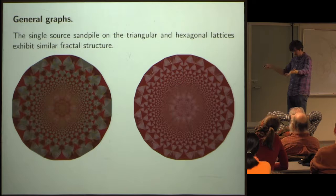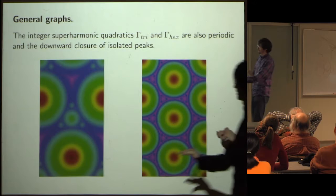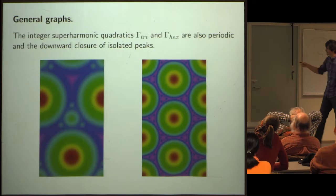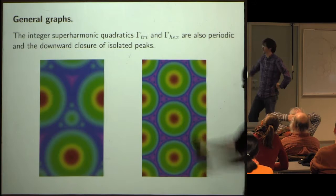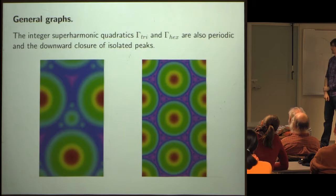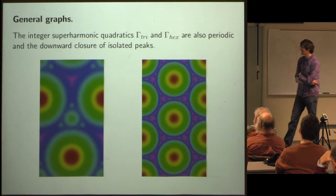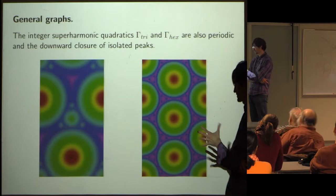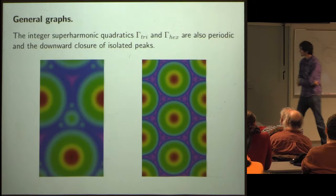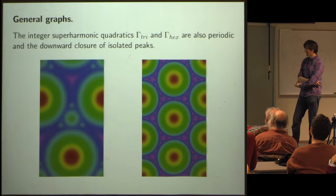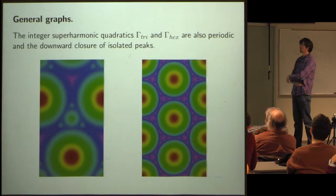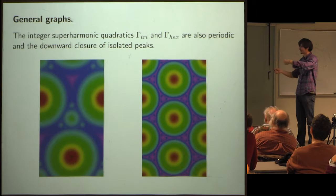We can run the algorithm and estimate gamma for these other lattices, and the single-source sandpile on them has nice fractal shapes. These gamma sets for the triangular lattice and hexagonal lattice give other images. We were staring at these images for a very long time — the square lattice picture was much more immediately recognizable.